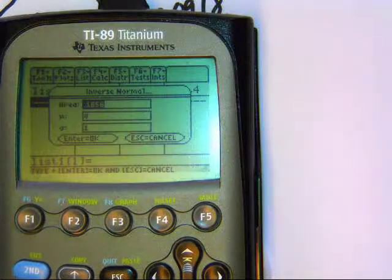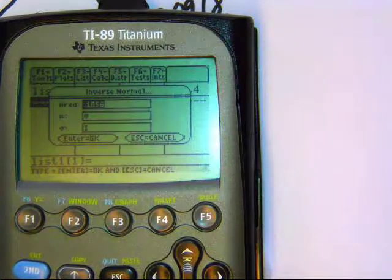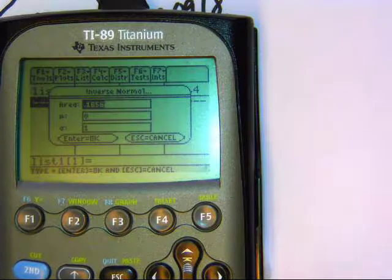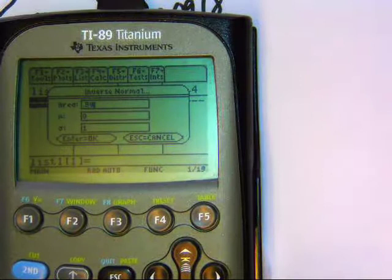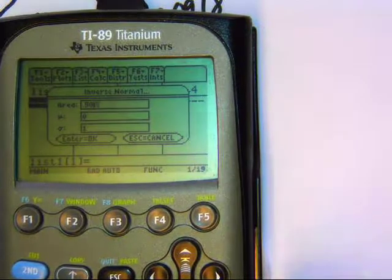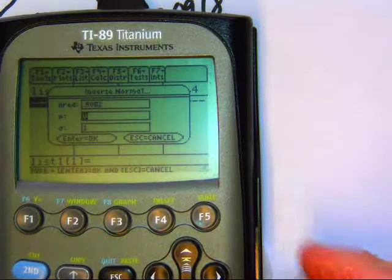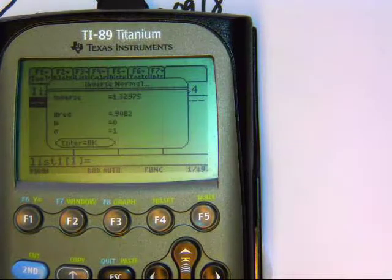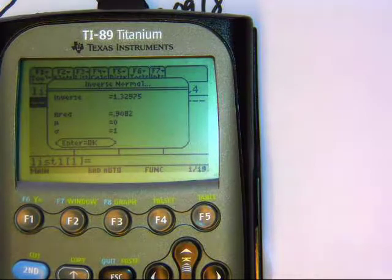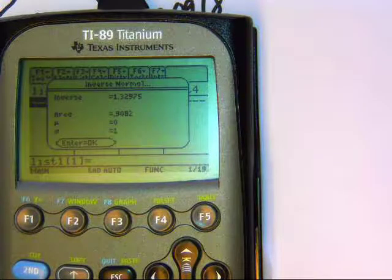And then we want to put in there how much area is to the left of our Z-score we're trying to find. So we're going to put in here 0.9082. And because this is talking about Z-scores, our mean is 0 and our standard deviation is equal to 1. So that's our answer. It's 1.3298.